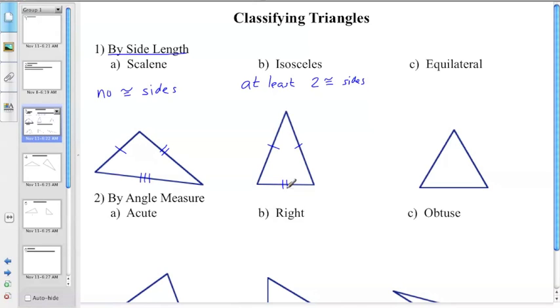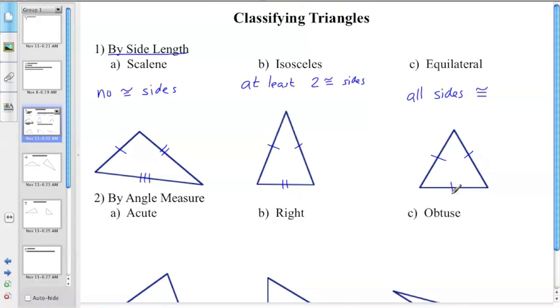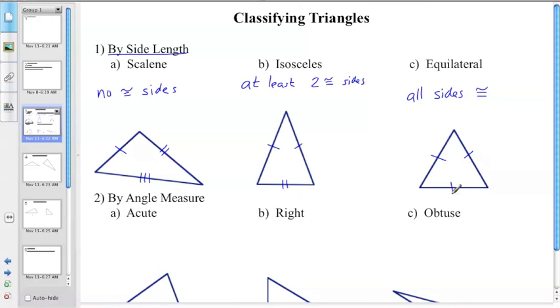And equilateral is all sides congruent. So the question I have for you is: is an isosceles triangle equilateral? And the answer is no. Is an equilateral triangle isosceles? And the answer is yes.